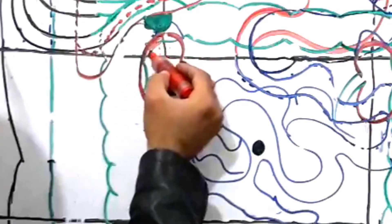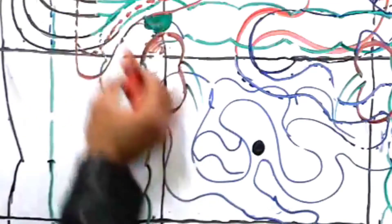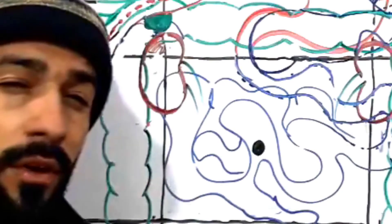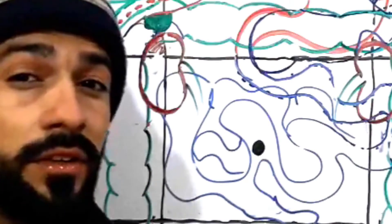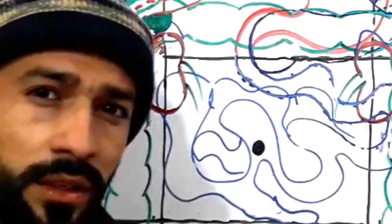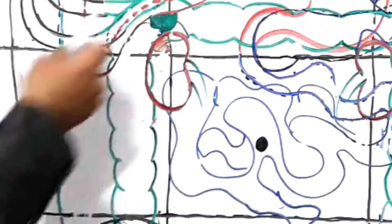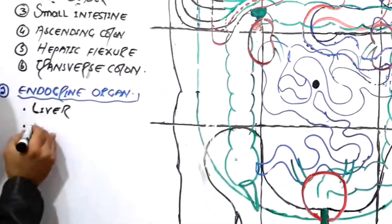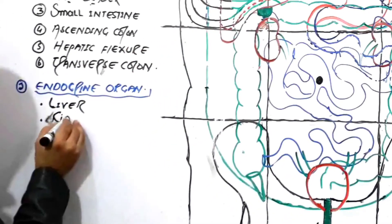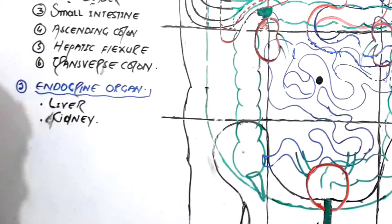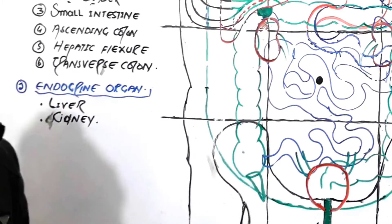The part of the kidney shown is present in the right hypochondric region. The kidney performs endocrine activity by releasing erythropoietin hormone and renin hormone. These hormones perform endocrine functions in our body. So the endocrine organs in the right hypochondric region are the liver and the kidney — though not all of the kidney, only some part of it.